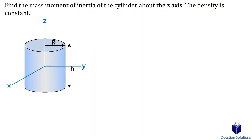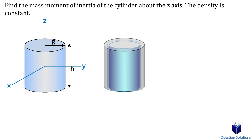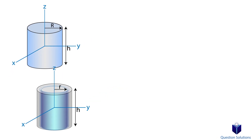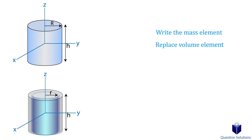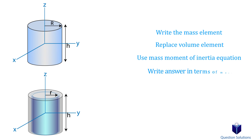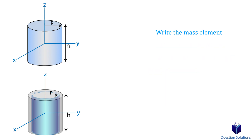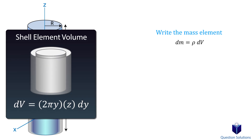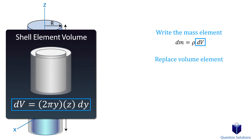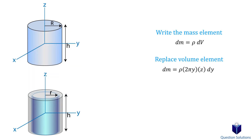Here we have a cylinder and we need to find the mass moment of inertia about the z-axis. Looking at the shape, the easiest method to use is the shell method. By following a set of steps we can get to our answer. First, we write the mass element for our cylinder. Then we replace the volume element with the volume element of our shell. We look at our diagram: the height is h and y is replaced by r, the radius. Don't forget to change dy to dr when you do this.